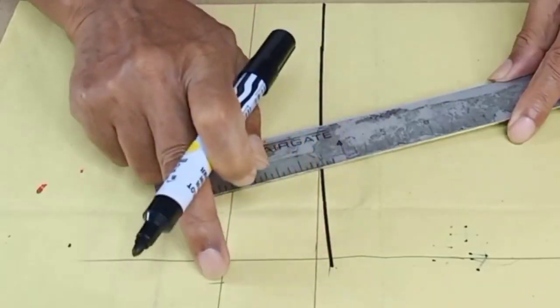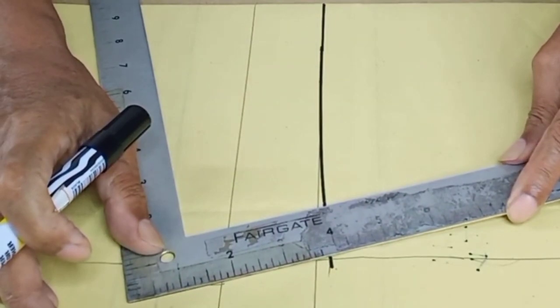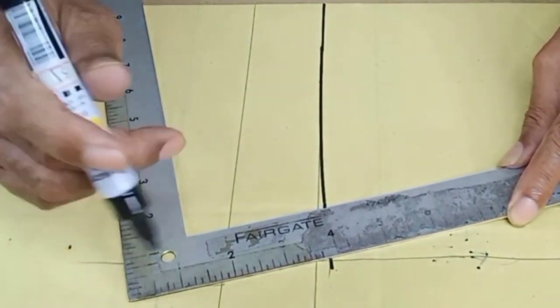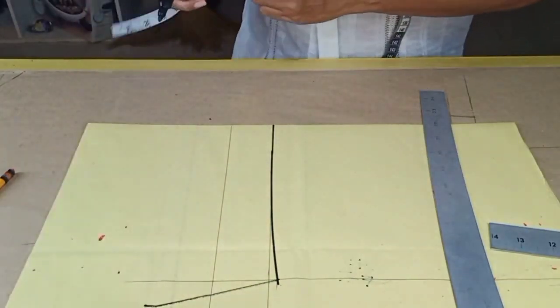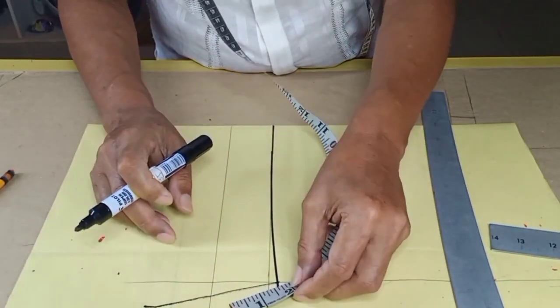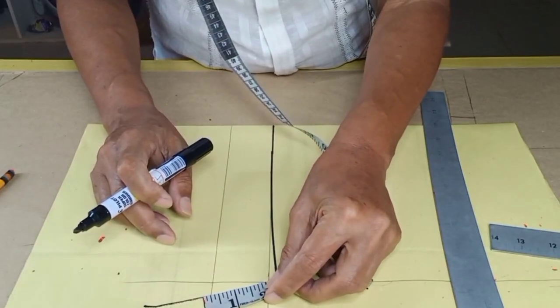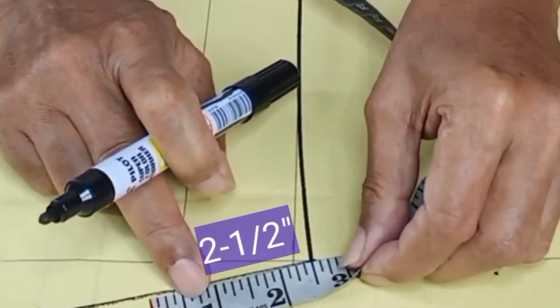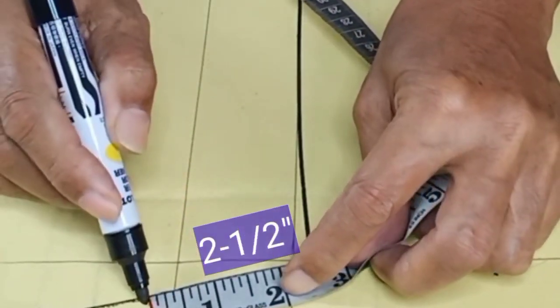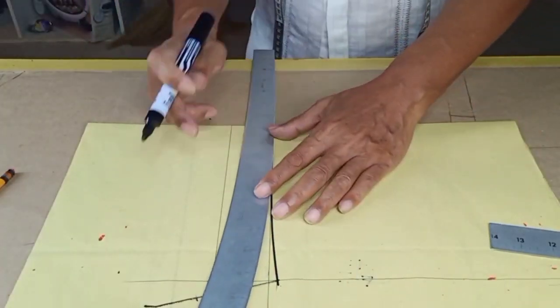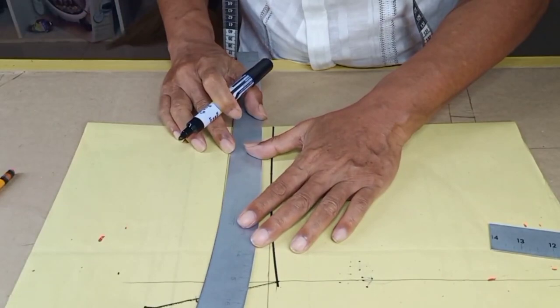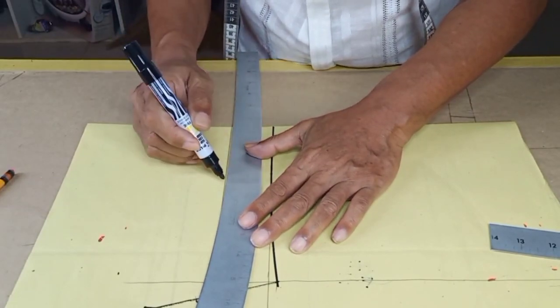And from here, connect lines upward for the tip of collar. And from dark line, measure two and one half inches upward. Then connect it using hip curve. Just follow the placement of our hip curve.